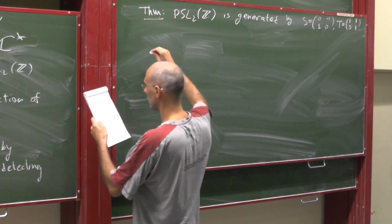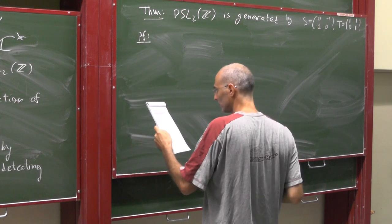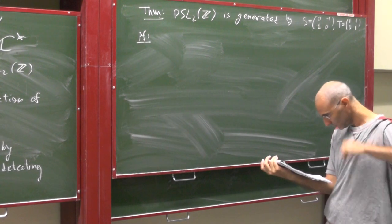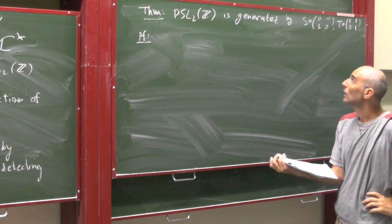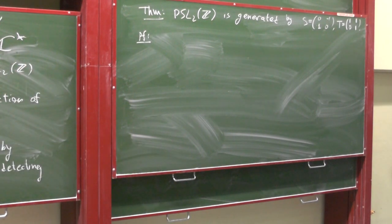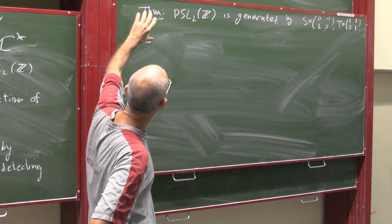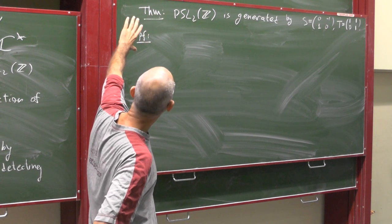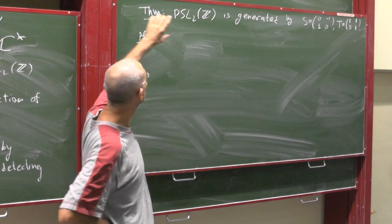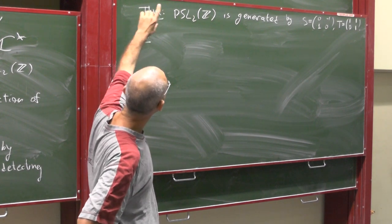I need to show that every element of PSL2Z is given by a word in S and T. It's called the Euclidean algorithm, and I will describe it precisely this way. But I want to use that picture. And this is a method that relates to the Euclidean algorithm. I want to use the geometry here.